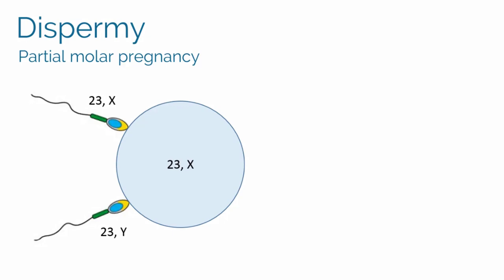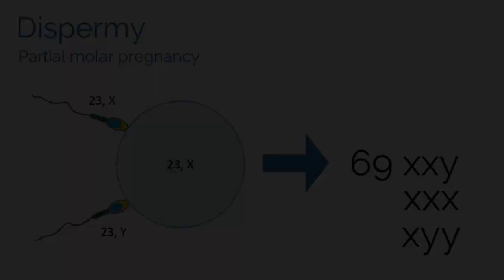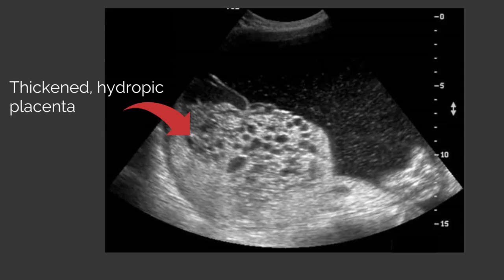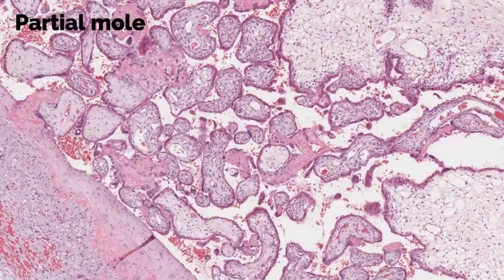In partial molar pregnancies, dispermy occurs, with two sperm fertilizing an egg. Two paternal haploid sets of chromosomes and one maternal haploid set fuse, resulting in a triploid 69,XXY or 69,XXX — or rarely 69,XYY — karyotype. On ultrasound, there is typically a thickened, hydropic placenta with a concomitant fetus. The coexisting fetus present with a partial mole is non-viable and typically has multiple malformations with abnormal growth. Microscopically, fetal tissue is present.